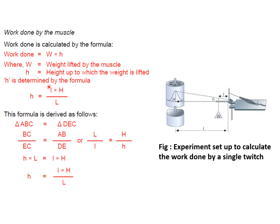Height is determined by the formula: h = l × H / L. This formula is derived as follows: L / L = H / h, so height h = l × H / L. Here L is the height of the curve, small h is height up to which the weight is lifted, W is the weight, and small l is another measured length.